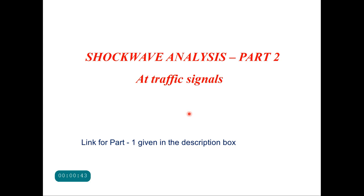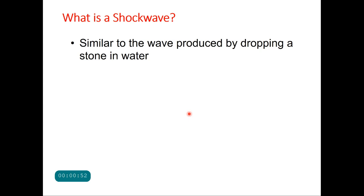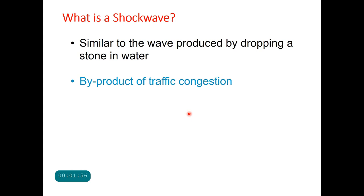Before that, let us brush up our understanding on shock waves. As I told you in the first part, a shock wave is similar to the wave produced by dropping a stone in water — waves are generated and travel with a certain velocity. Same is the case with traffic flow. Whenever a disturbance is created in the traffic stream, shock waves are generated and these waves travel either upward or downward depending upon the nature of disturbance. A shock wave originates from a sudden and substantial change in the state of traffic flow, defined by a discontinuity in the flow-density conditions in the time-space domain, and it is generally a byproduct of traffic congestion.